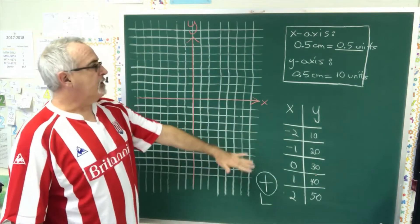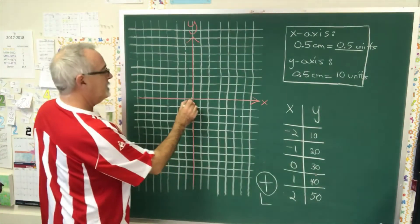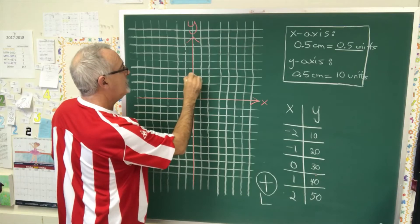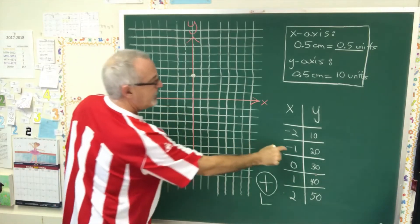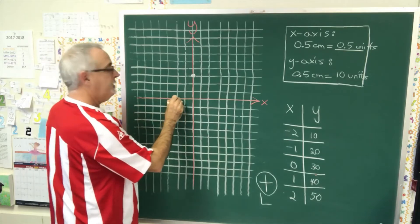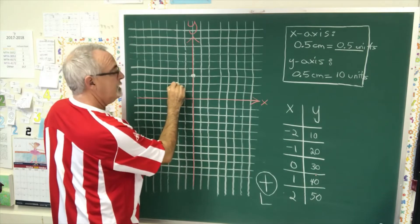Now, we can start graphing because we've decided on the scale of our graph. 0,30 is therefore here. Then, negative 1,20. Negative 1 is 2 squares to the left. Remember how we scaled the x-axis. Negative 1,20 is here.